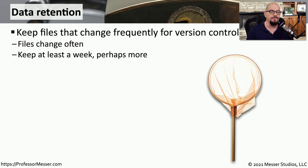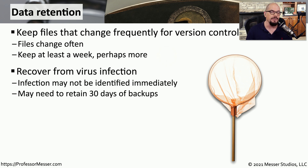There might also be reasons for retaining data, especially data that might change often. This might even go beyond what is normally done with a daily or weekly backup. Very often, the data retention process can save different versions of a file, sometimes over a number of days or weeks. These data retention policies might also help if we run into a virus infection. If we know that we're retaining data at least 30 days old, then we have a window of time to discover whether a system may have been infected, and we can roll back to a previous version of known good data.